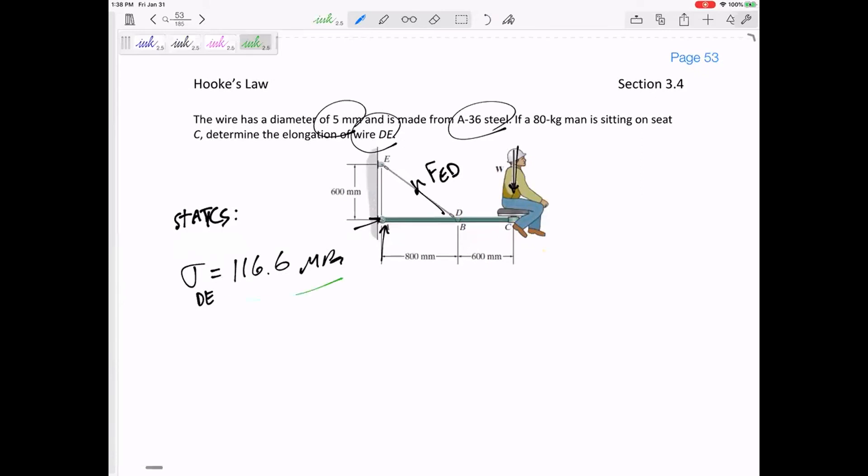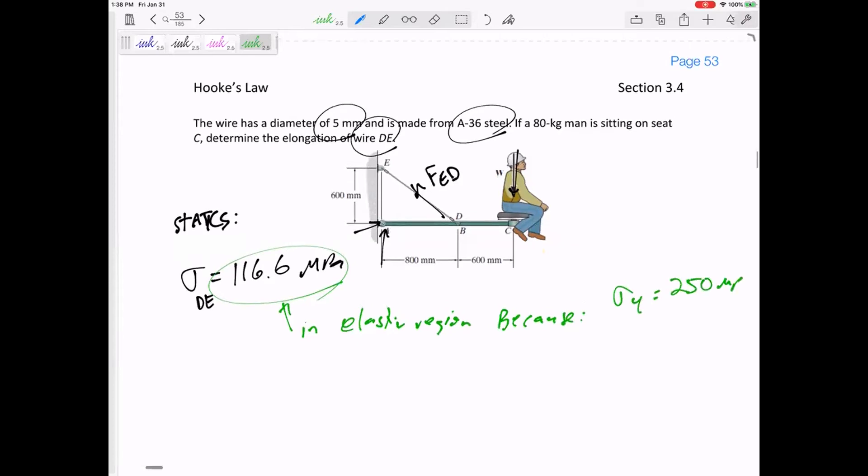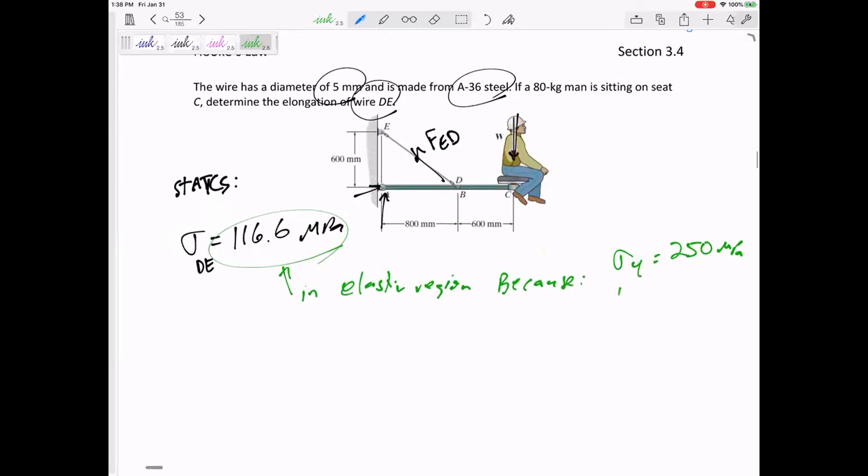And so then we don't have to have the stress-strain diagram in the elastic region. So here, let's kind of do this one. In the elastic region, because from the back of the book, the yield stress is 250 MPa. So if I'm only at 116, then I know it's in the elastic region.